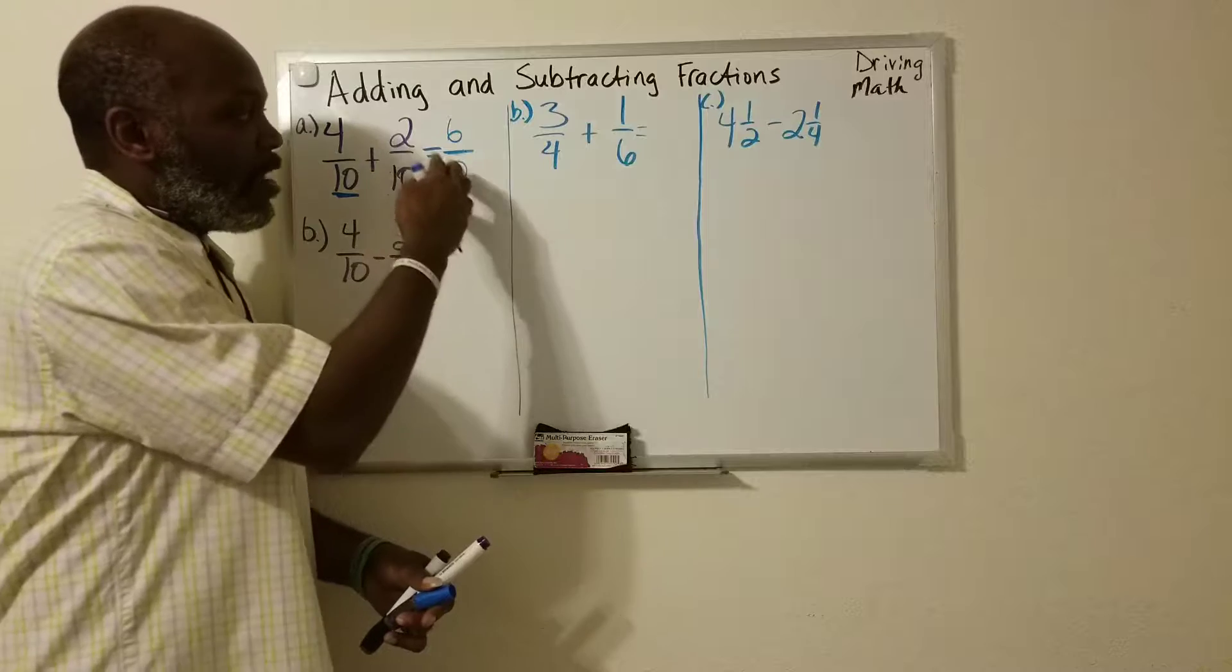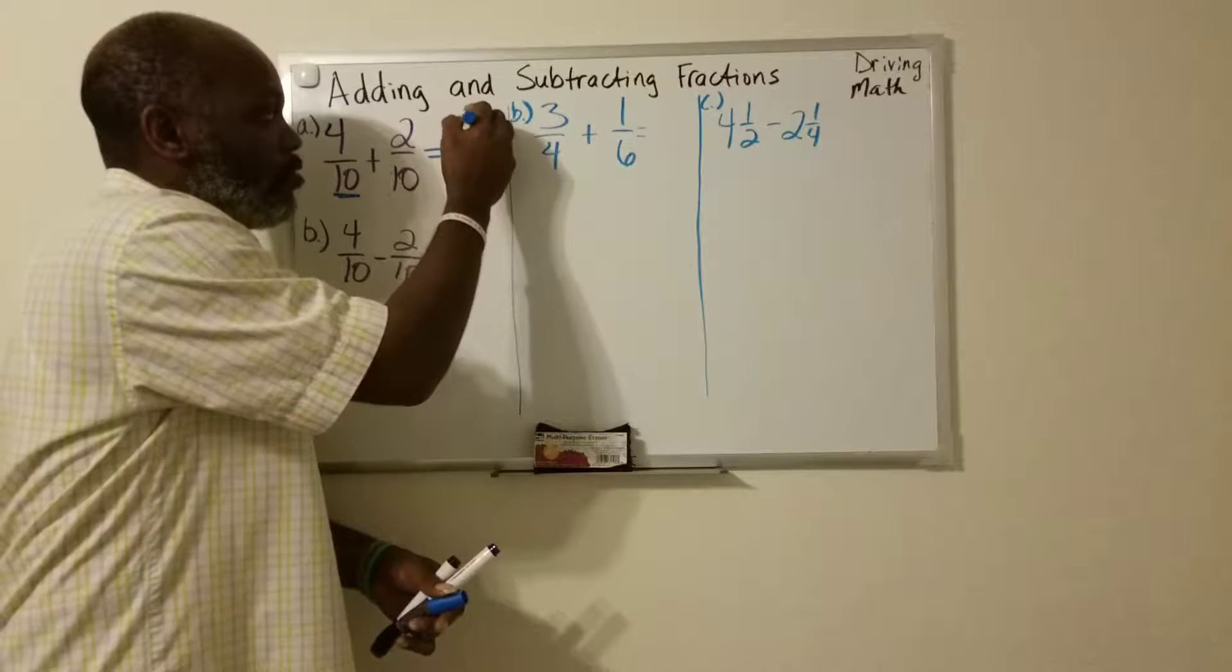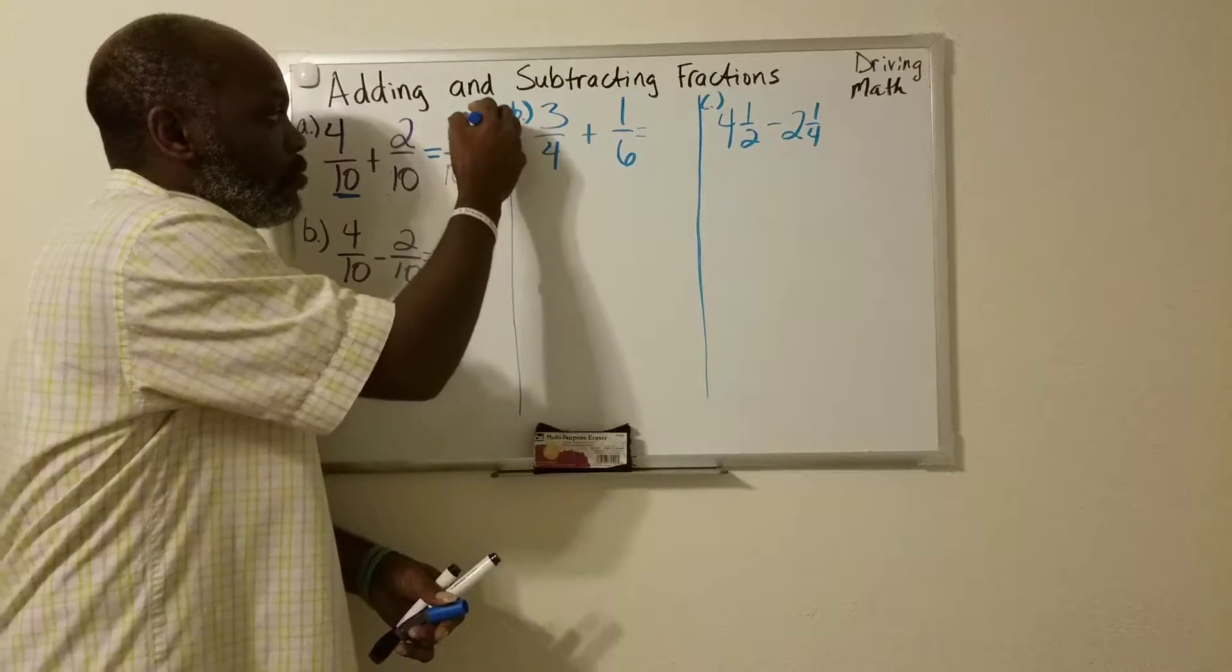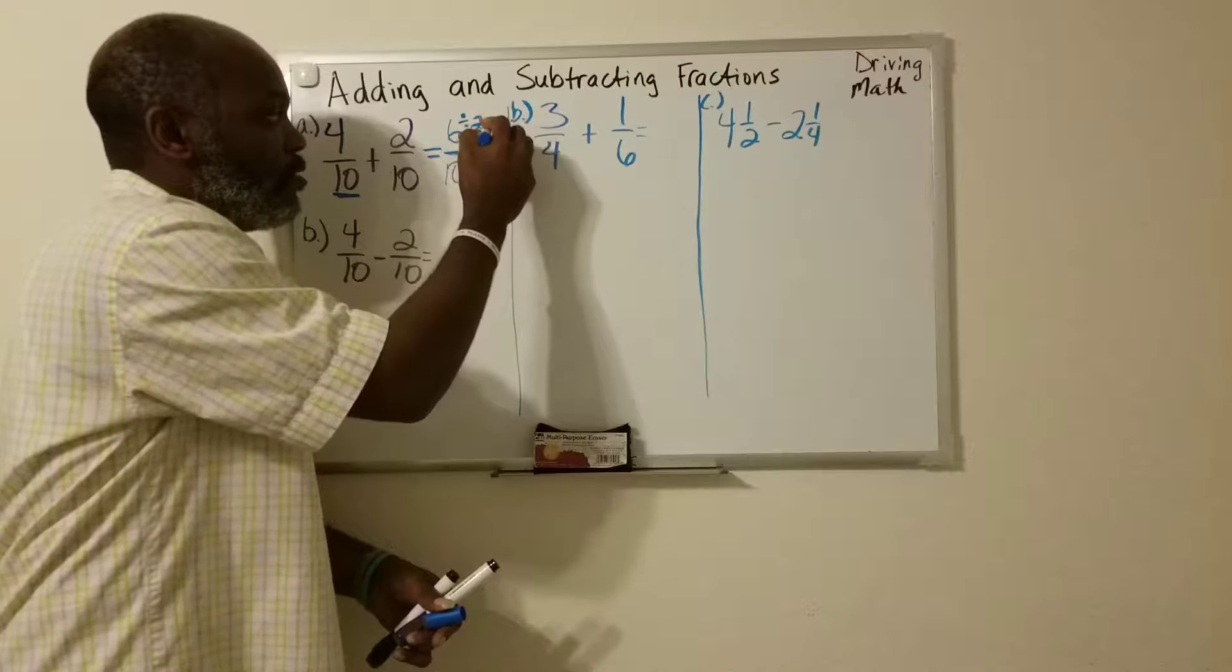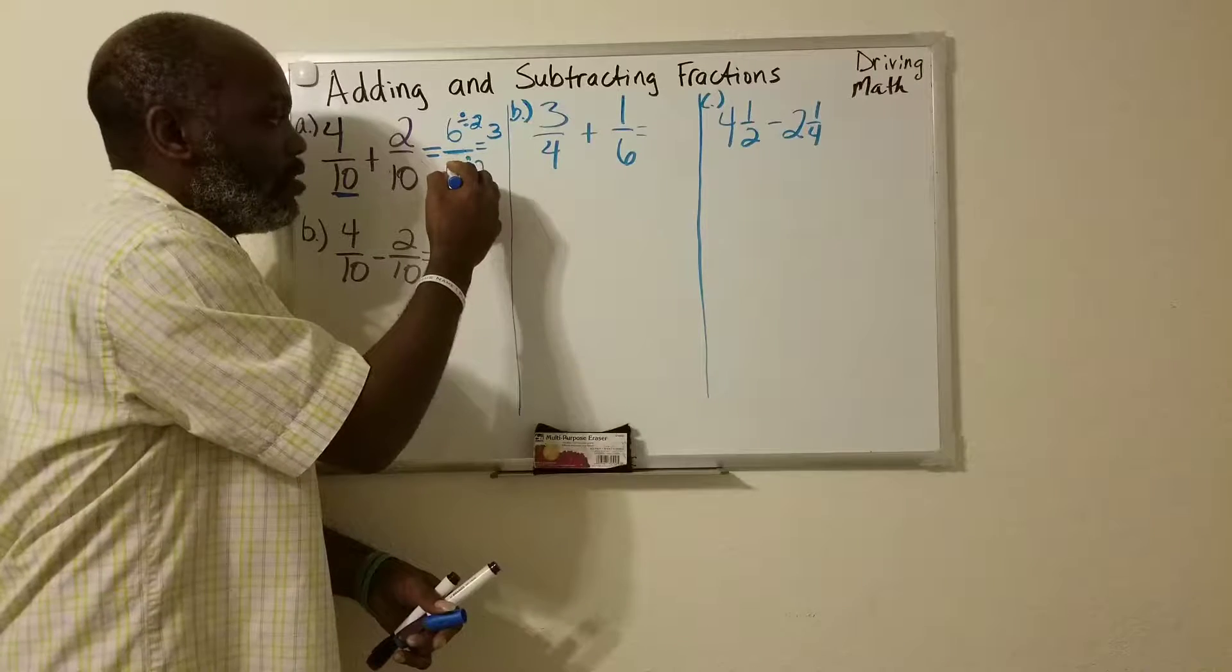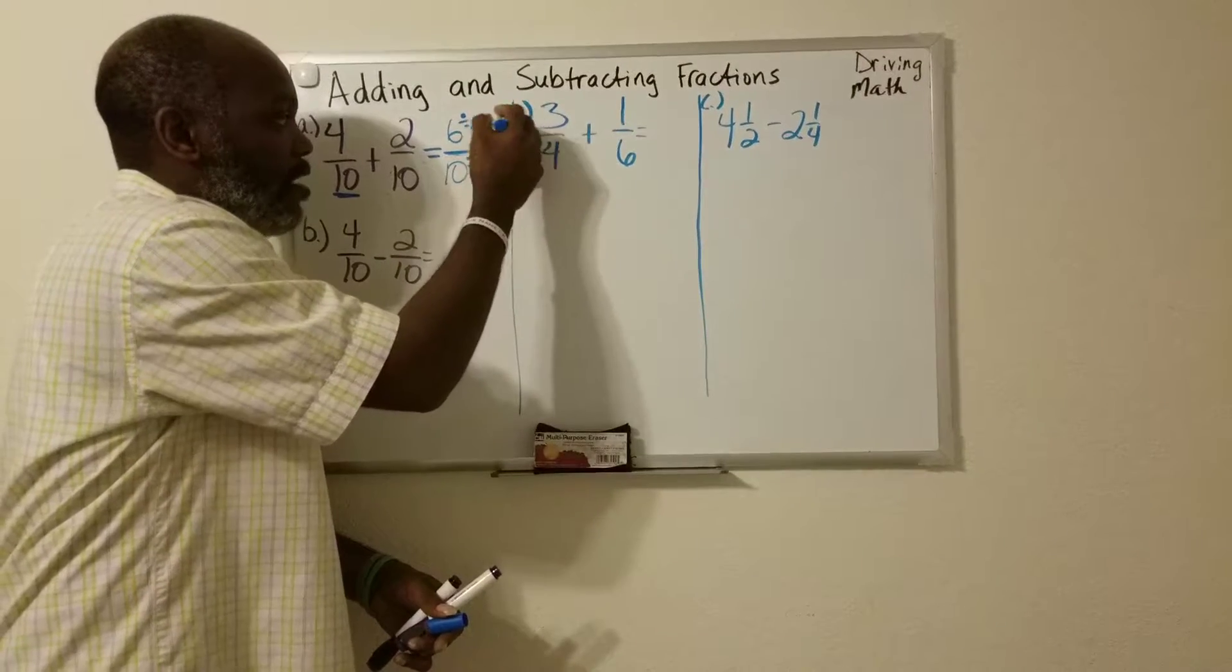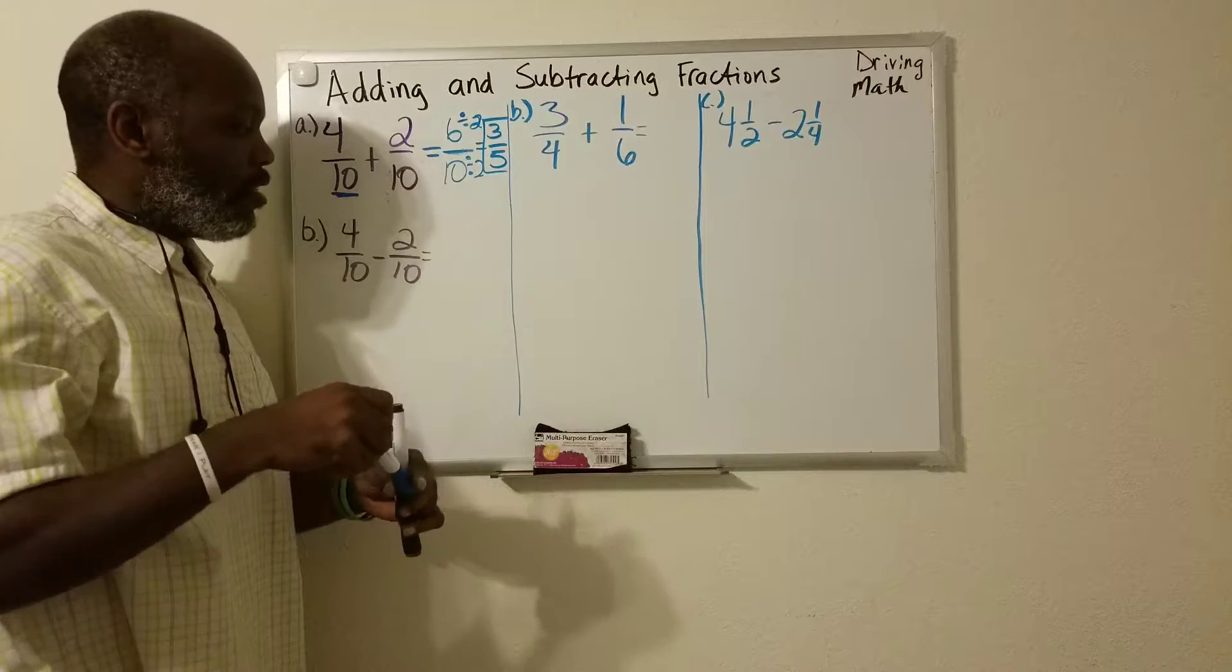How do I know that? Because I can reduce them both by 2, which would leave me with 6 divided by 2, that's 3. And 10 divided by 2 is 5. And that's my answer.